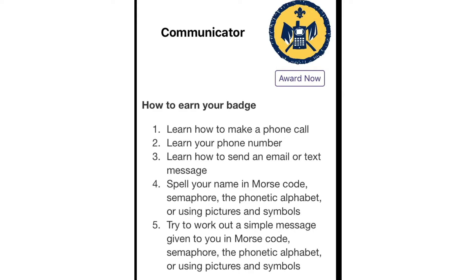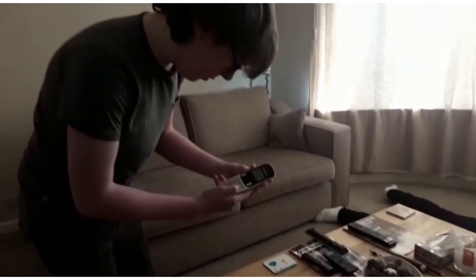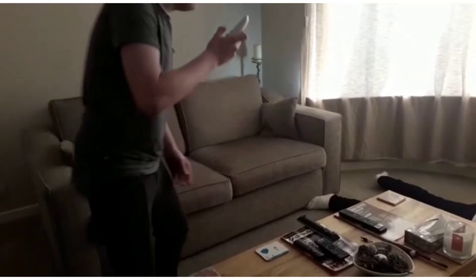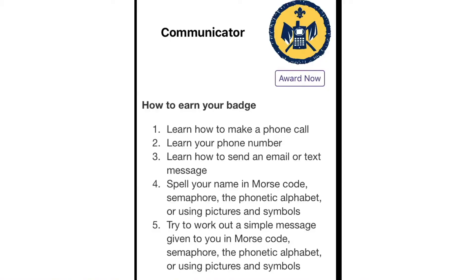The first thing you need to do is learn how to make a phone call. In the previous video we learned how to make a phone call in an emergency. Next you need to learn your phone number or your parent or carer's mobile number. Then you need to learn how to send an email or a text message.